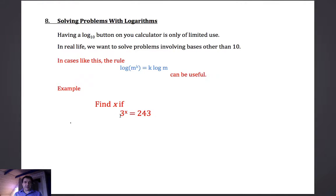So if we've got something like 3 to the power of x is 243 and we want to find out what x is, then that rule is going to be useful in solving a problem that's 3 to the power of x rather than 10 to the power of x.